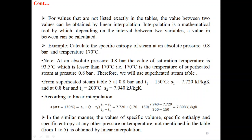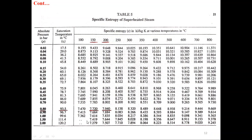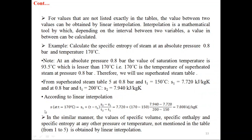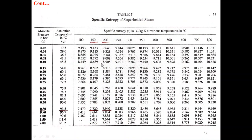For values that are not listed exactly in the tables, the value between two listed values can be obtained by linear interpolation. Interpolation is a mathematical tool by which, depending on the interval between two variables, an intermediate value can be calculated. For example, calculate the specific entropy of steam at absolute pressure 0.8 bar and temperature 170°C. Since 170 lies between 150 and 200, we have to use interpolation.